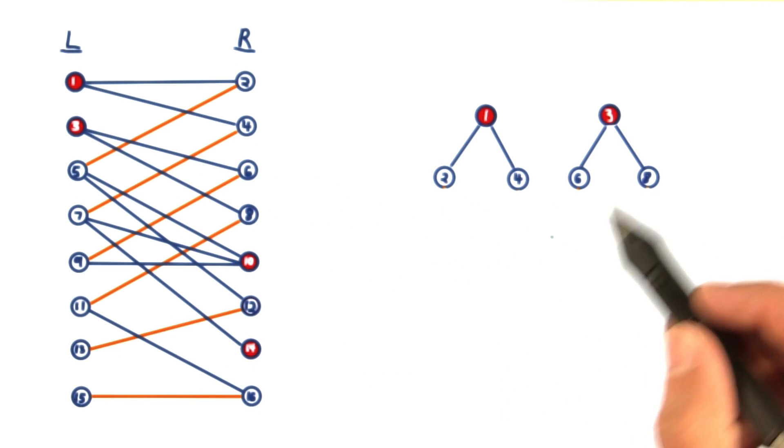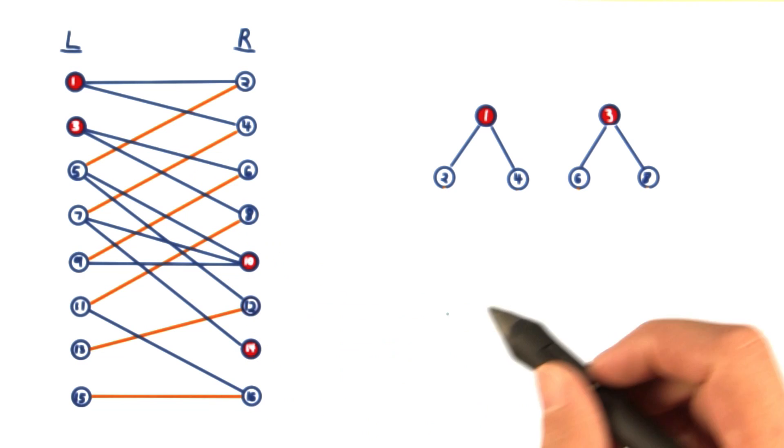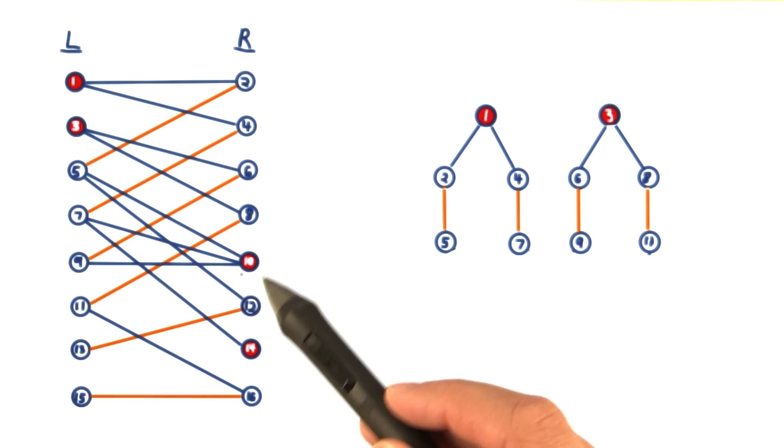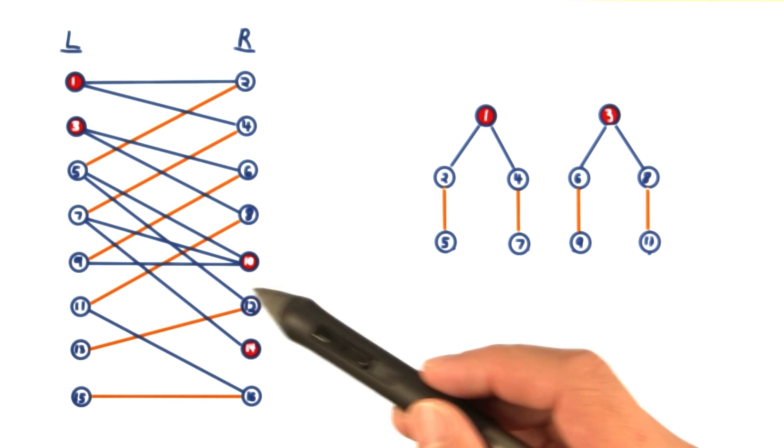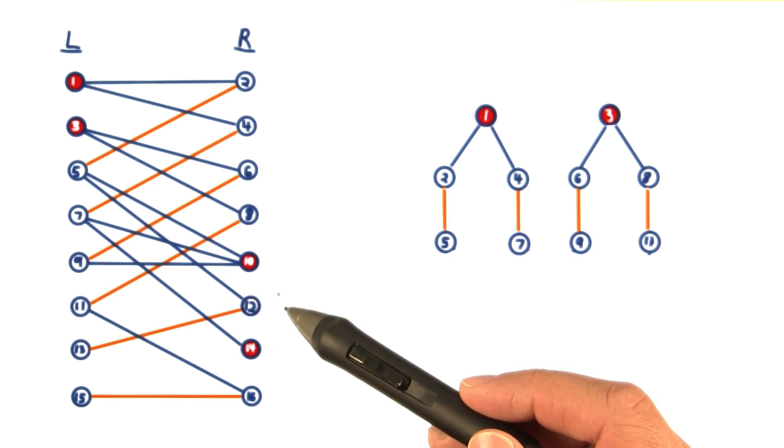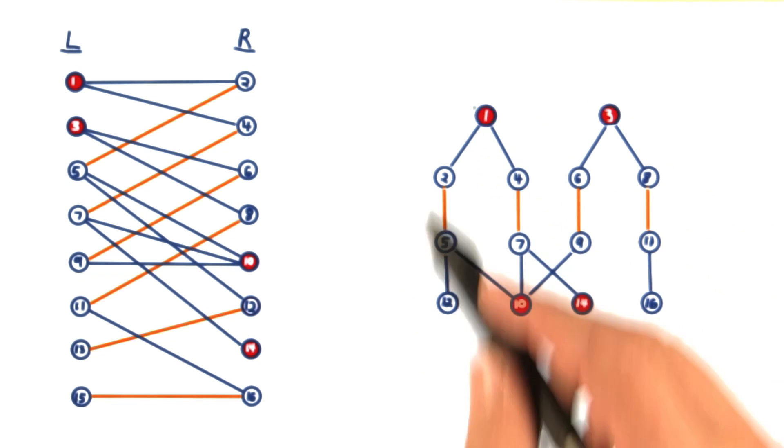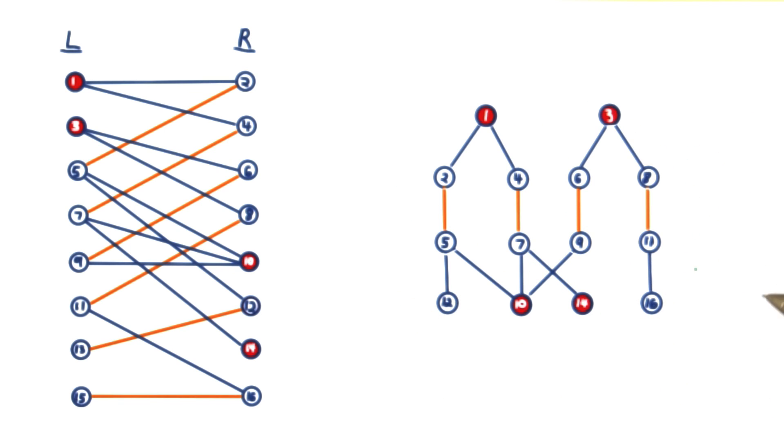Then, we follow matched edges to get back to the left-hand side. And then we follow along unmatched vertices, which lead us to an unmatched vertex on the right-hand side. So that's the level we can stop at. And we end up with this here for our total level graph.